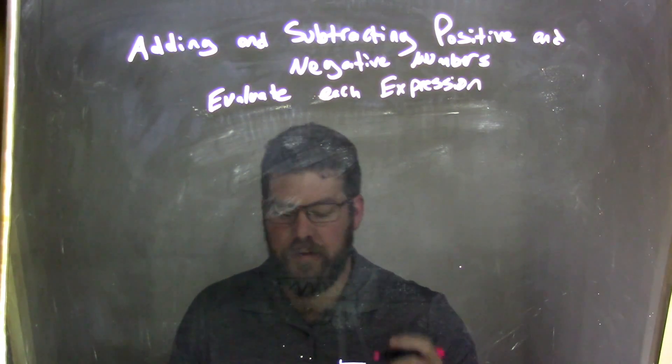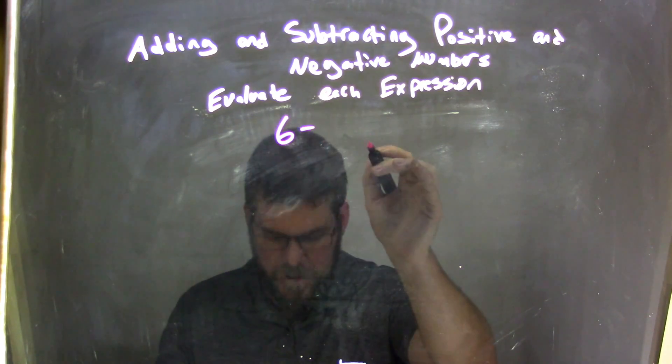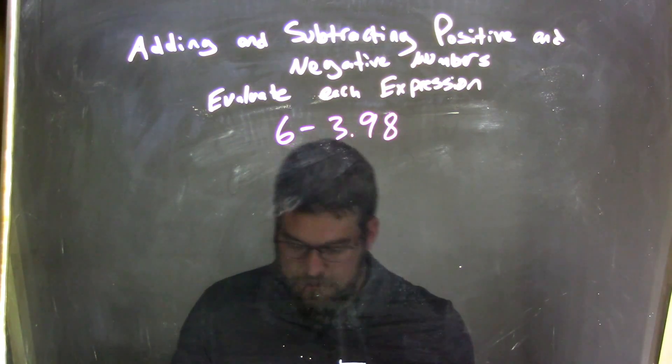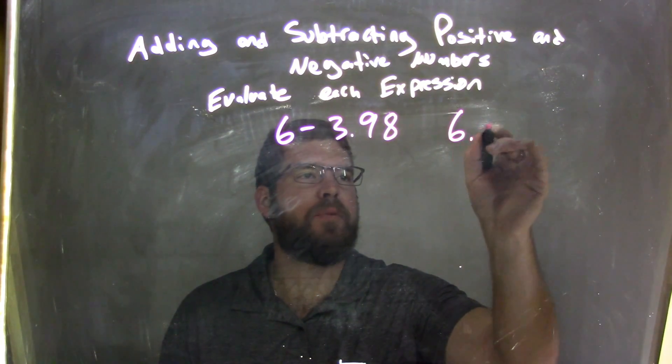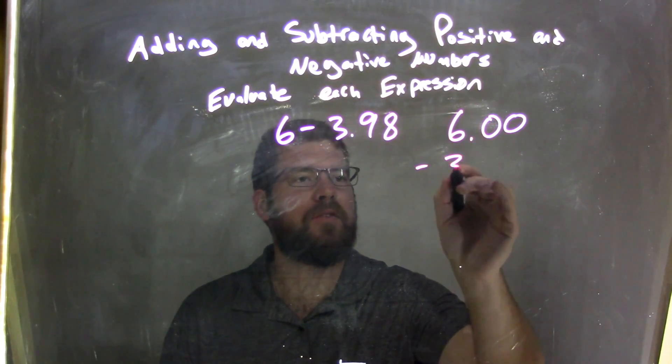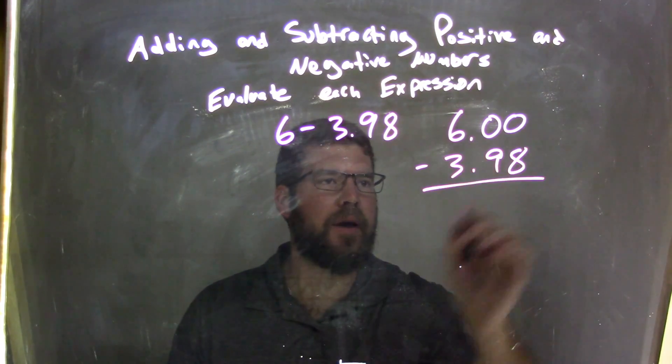If I was given this expression, 6 minus 3.98, I'm going to write this on the side as 6.00 minus 3.98.